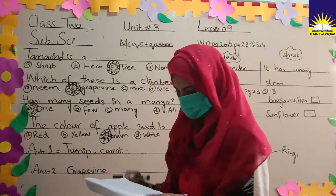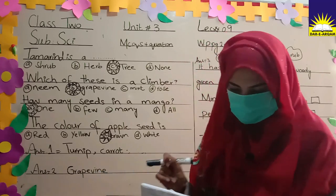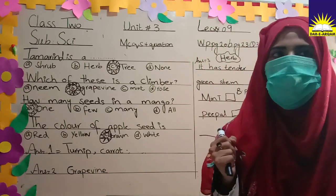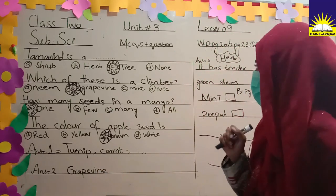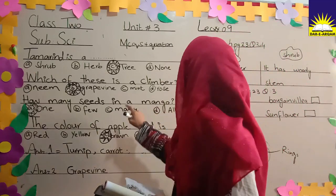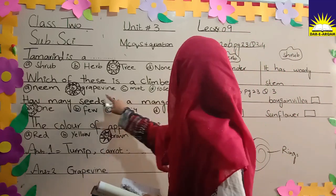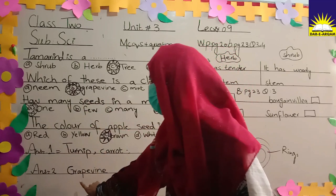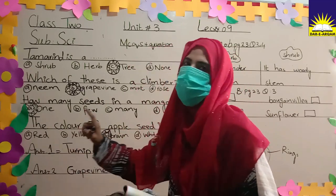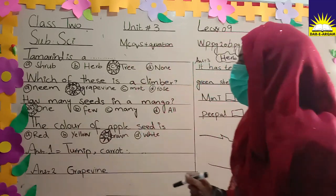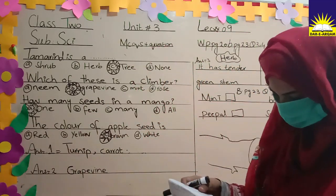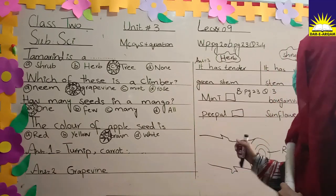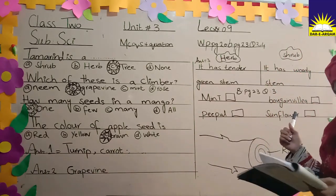Question two: write an example of a climber. We have seen this in the MCQs. The answer is grape vine. So we will write grape vine as the example of a climber.